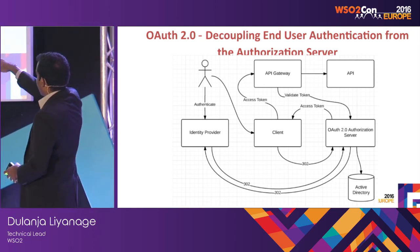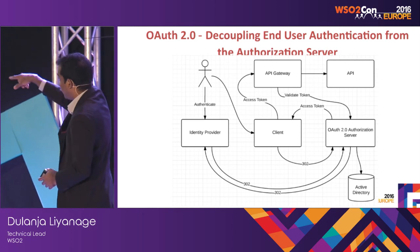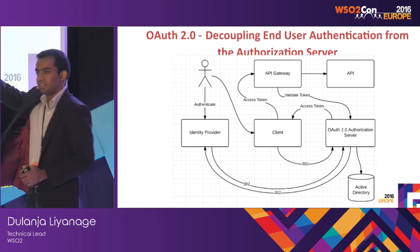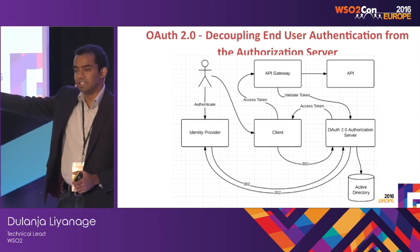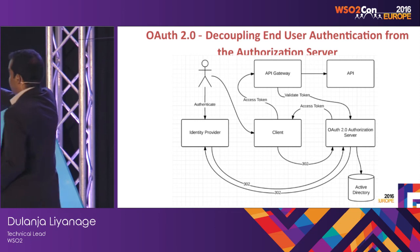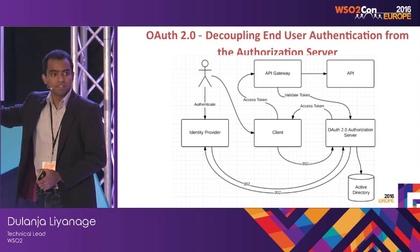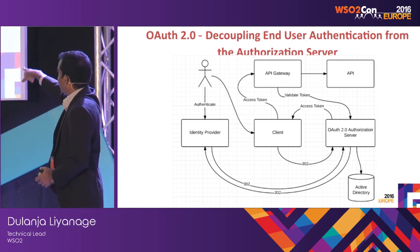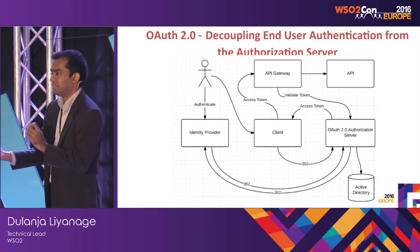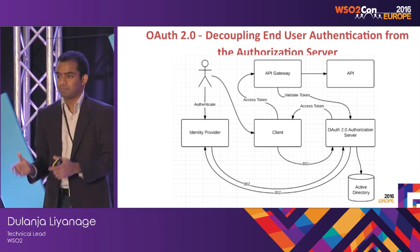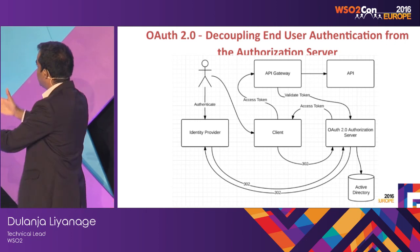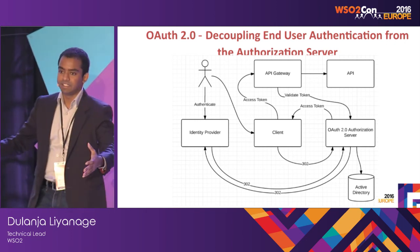In that case, when the client calls the authorization server, it redirects the user to the actual identity provider — in this case, Google. The user authenticates there. This is a federation pattern. The user authenticates and sends a valid response back to the authorization server. The server creates a code and sends it back to the client. The client sends the code back and gets a token, and the communication happens. We have decoupled the authorization server and the actual identity provider.